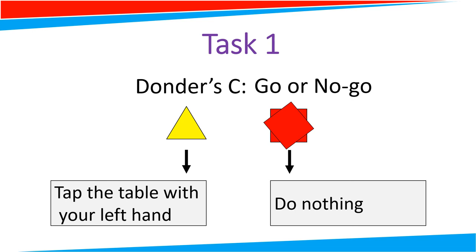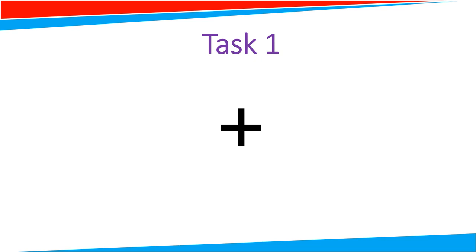What about Donder's C? Go, no-go. So this time, if you see the yellow triangle, still tap the table with your left hand. But if you see this red squarish thing and starish thing, then please do nothing.